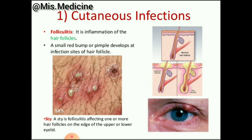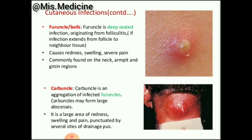The first cutaneous infection is folliculitis, which is inflammation of hair follicles. A small red bump or pimple develops at the infection site of the hair follicle. A sty is folliculitis affecting one or more hair follicles on the edge of the upper or lower eyelid.